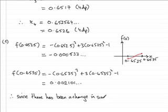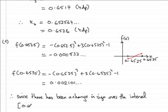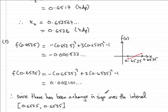...change in sign over the interval [0.6525, 0.6535] — intervals are often written in square brackets, taking the lower and upper bounds — and because the curve is continuous in this interval, we know there will be a root. Since there's been a change in sign over the interval 0.6525 to 0.6535 and the curve is continuous...